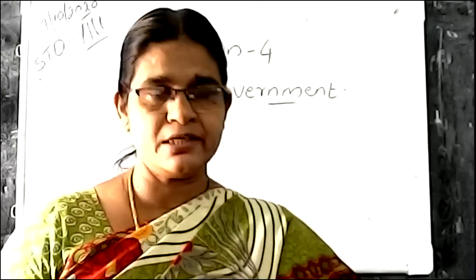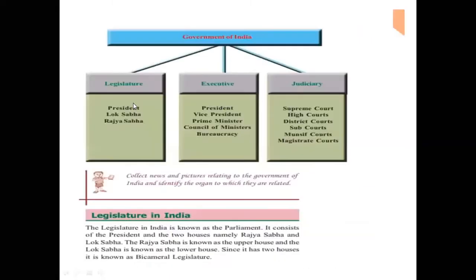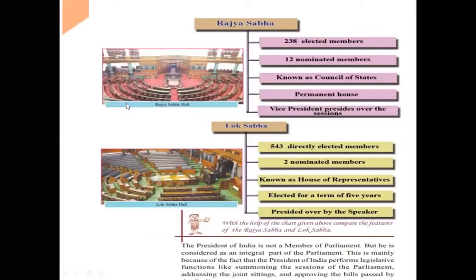Can you see the difference? The Rajya Sabha hall carpet is the red color, and the Lok Sabha carpet is the green color. Then look at the seating arrangement — there are differences between the Rajya Sabha hall and the Lok Sabha hall.